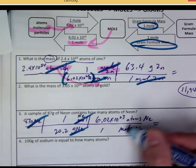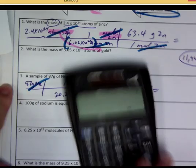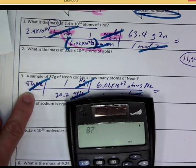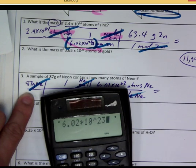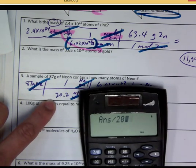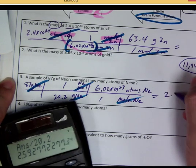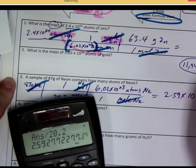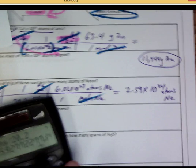The unit moles cancel out. Okay? And then we take the numbers on top, multiply the top. 87 times 6.02 times 10 raised to the 23rd. I put equal and then divide, or I can divide with it, divide by 20.2, and I get 2.59 times 10 to the 24th atoms of Neon. And that's how you do that one. Okay?